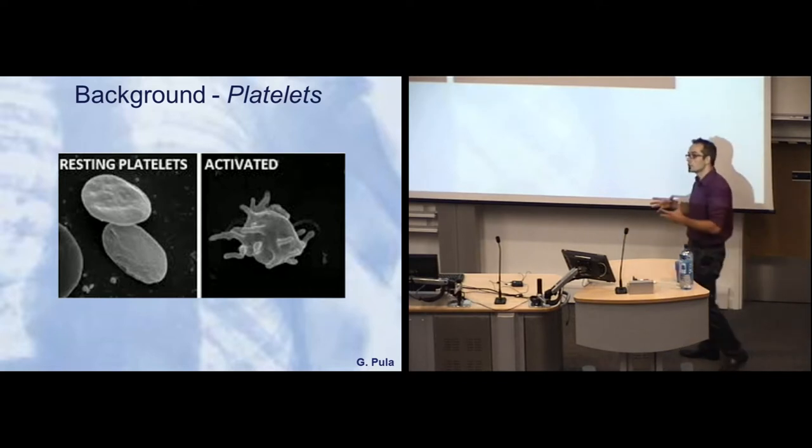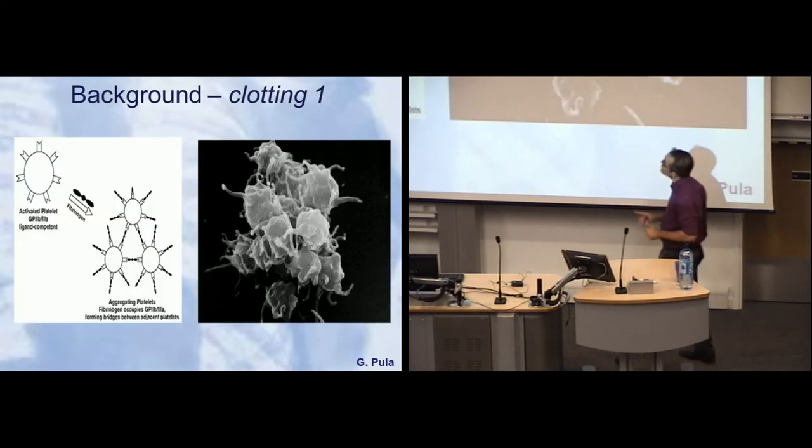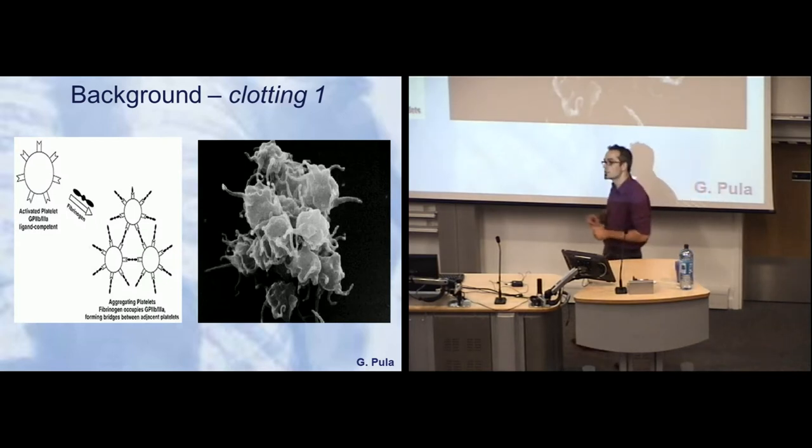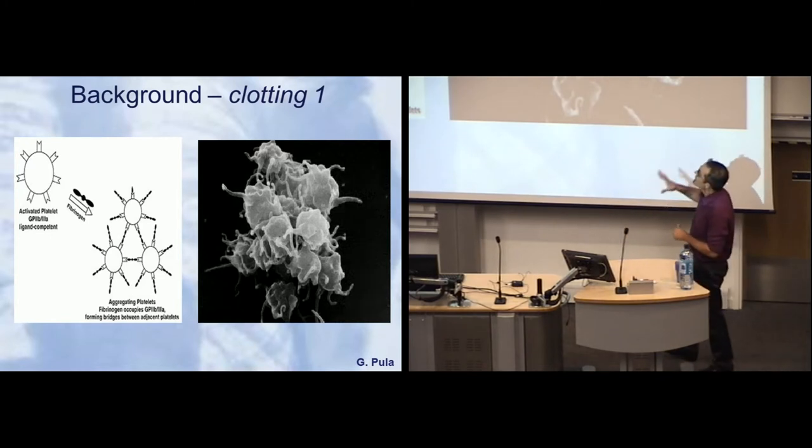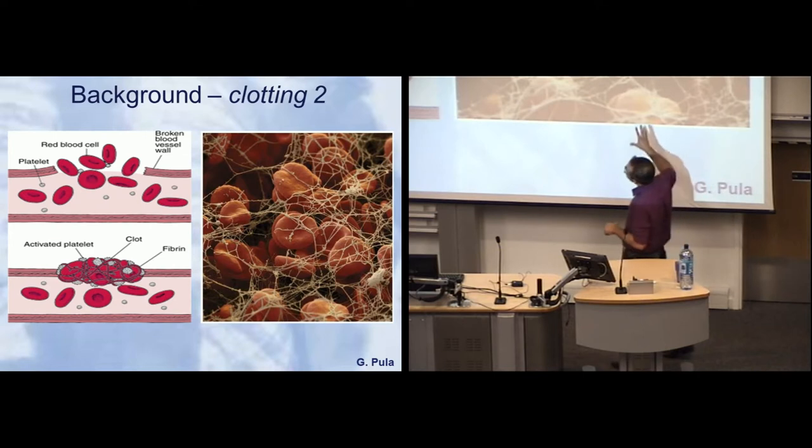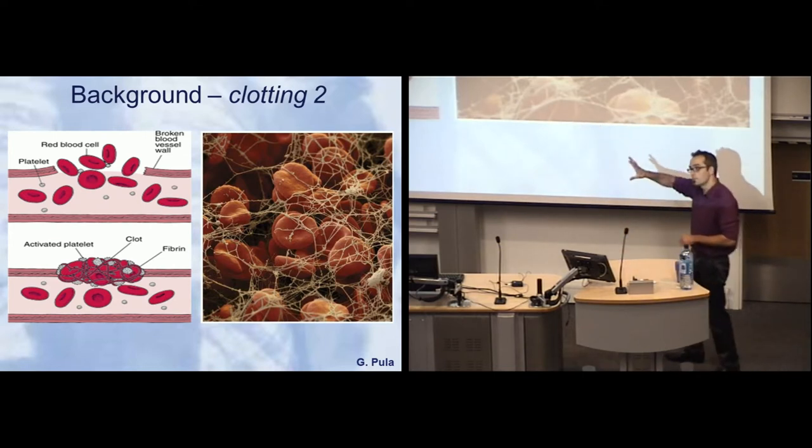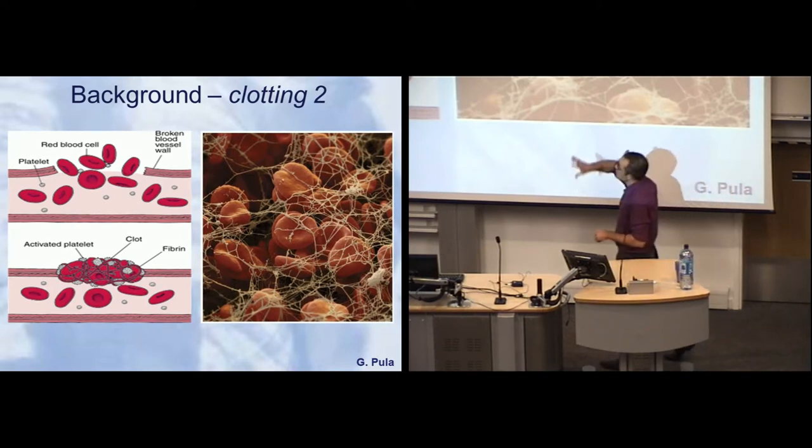They do so by binding fibrinogen, which is a plasma protein. Basically, a clot is a big mass of platelets kept together by fibrinogen. They also generate fibrin, which is a filamentous protein that traps other cells from the bloodstream and sometimes traps pathogens, so there is an immune role for platelets as well.